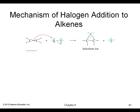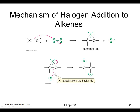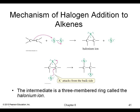Here's the mechanism, similar to the mercuric acetate reaction. Pi electrons attack and we form a three-membered halonium ring. Then the second halogen comes in from the opposite side of the first one, giving you the trans product from anti addition.